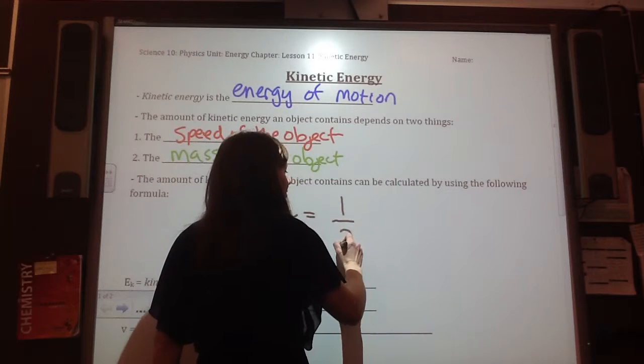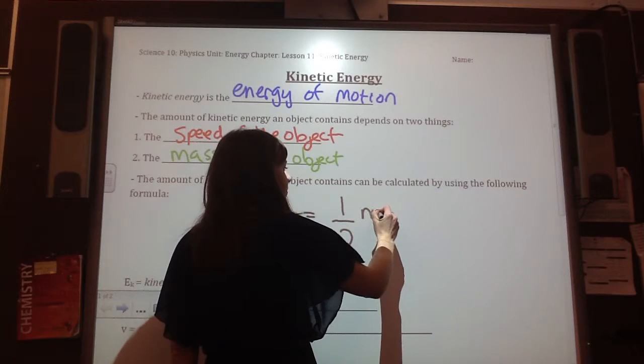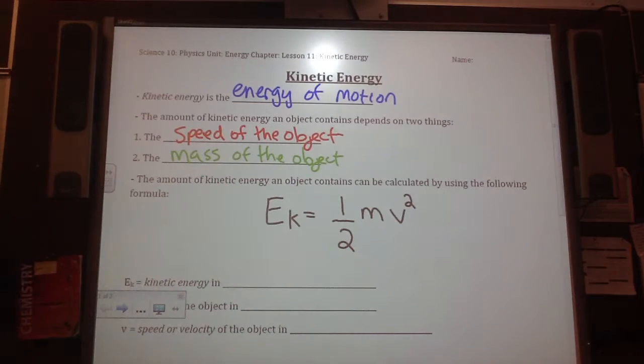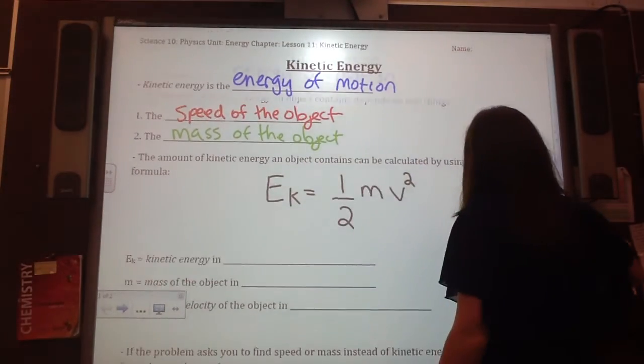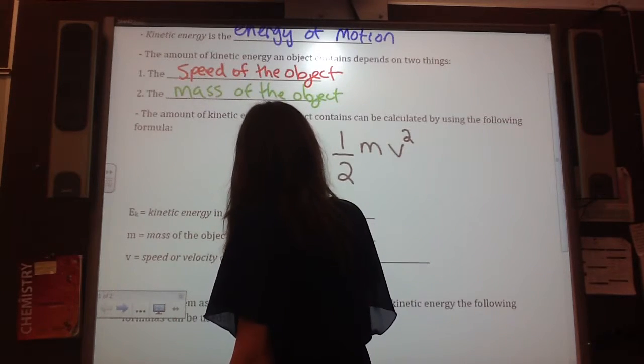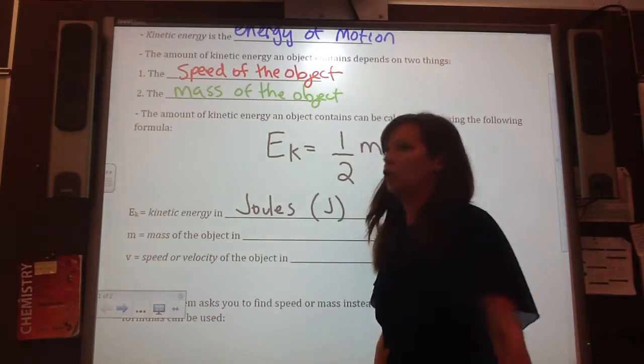Equals half mv squared. So half times m times v squared. Can you go 0.5? Yes. It's the v, it's not the graph, right? No, but the square only applies to the v. So, what does this mean? E is kinetic energy in joules, with a J for joules.